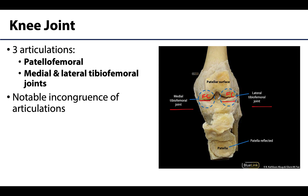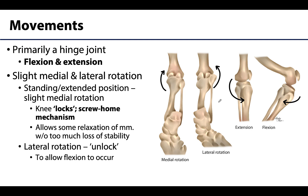Also within the same articular capsule is the patellofemoral joint, where the patella — the kneecap, reflected in this image — articulates with the patellar surface of the femur. This joint is capable of very small sliding motions of the patella that occur in conjunction with the hinge motions of the tibiofemoral joints. The knee joint is primarily a hinge joint but is often referred to as a modified hinge joint.